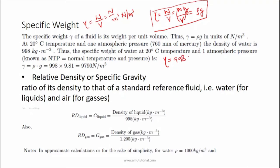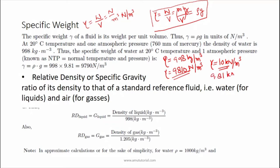The specific weight of water is assumed at 20 degrees Celsius and one atmosphere pressure. The density is 998 kg per meter cube, so the specific weight comes out to be 9810 Newton per meter cube. For calculation purposes we take gamma equal to 10 kilo Newton per meter cube, or 9.81 kilo Newton per meter cube.